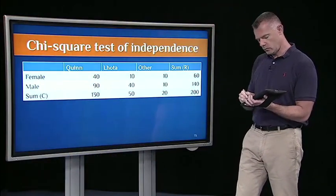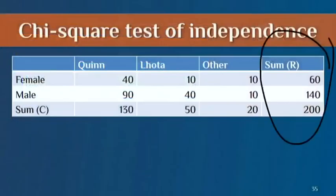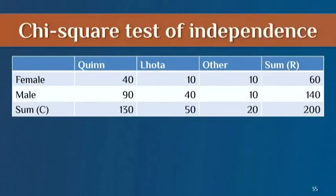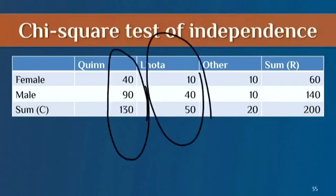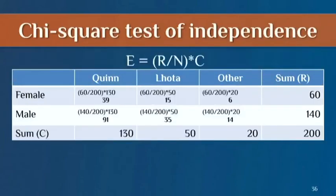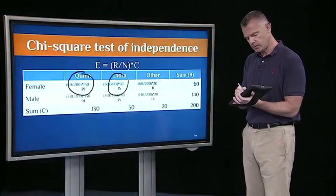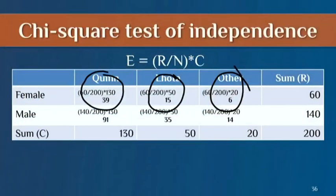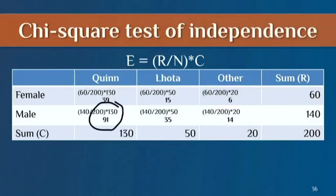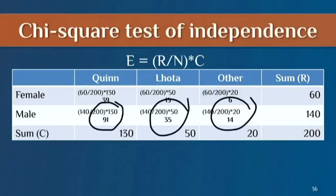Our row totals are: 60 females total, 140 males total. Our column totals are 130, 50, and 20. So I can compute my expected frequency counts — it's the total number of people in a row over the total number of people, times the total number of people in a column. Looking across the first row, I get 39, 15, and 6. Looking across the second row, I get 91, 35, and 14.